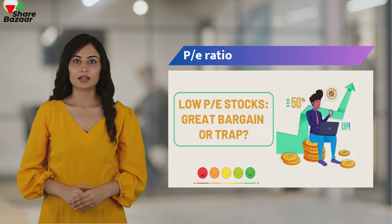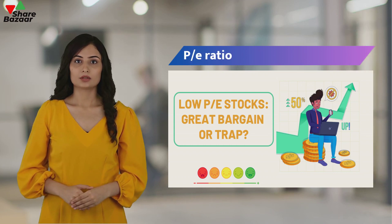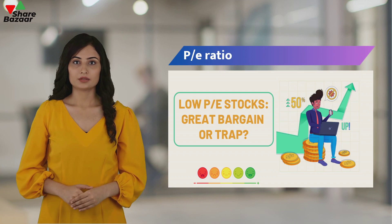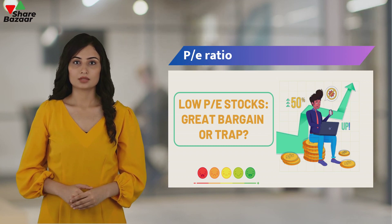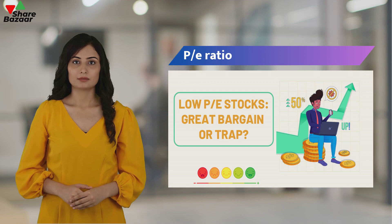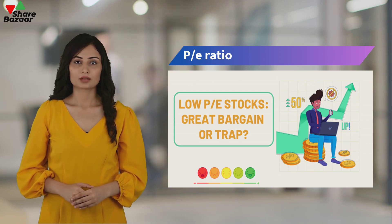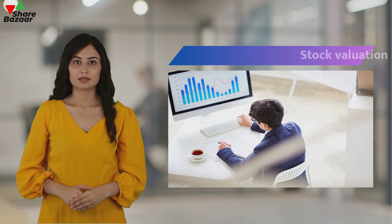The Price to Earnings (P/E) Ratio is a method used by analysts to determine the market value of a company's stocks relative to its earnings. A lower P/E ratio is often perceived as a positive attribute, suggesting that a stock might be undervalued.